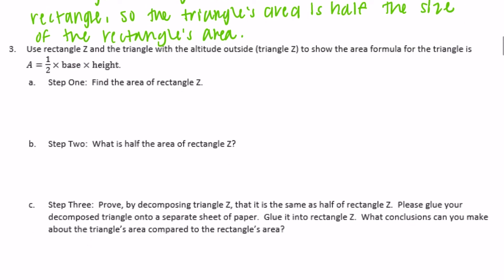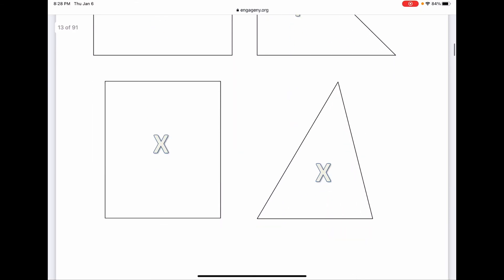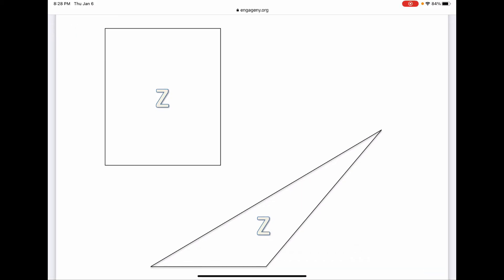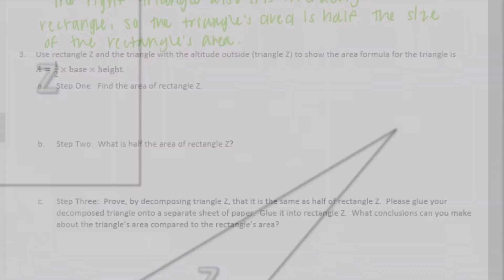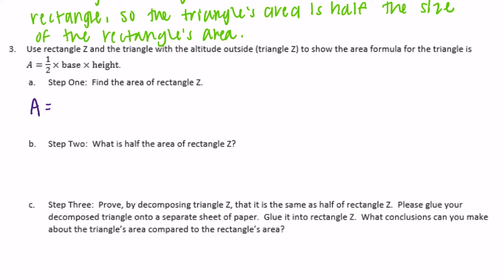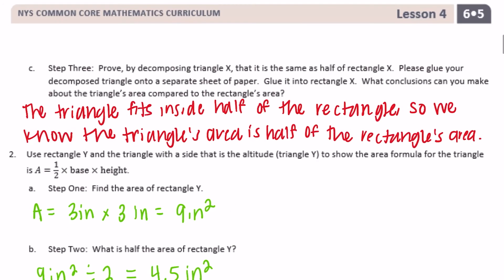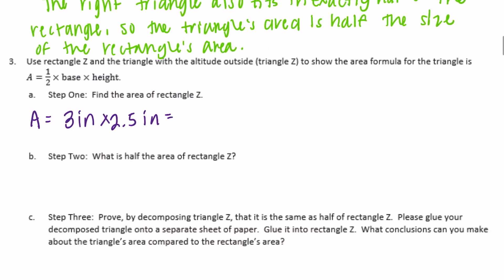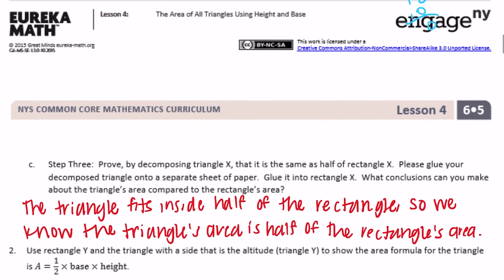Rectangle Z is a little trickier. We have rectangle Z and triangle Z. The area of rectangle Z — if you measure it out — is three inches by two and a half inches, which we already calculated as seven and a half inches squared. And half of that — seven and a half inches squared divided by two — was three and seventy-five hundredths inches squared.